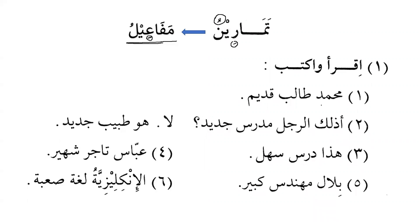The first example: Muhammadun talibun qadhimun. We say this because Muhammadun is the subject and talibun is the predicate, and the adjective for the noun is qadhimun. Talibun is singular and qadhimun is singular; both are masculine; both are marfu' and both are nakira. Muhammadun is marfu' because it is the subject — something we learned from lesson one — and the subject is always marfu'. Talibun is the predicate (khabar), and khabar is also always marfu'.